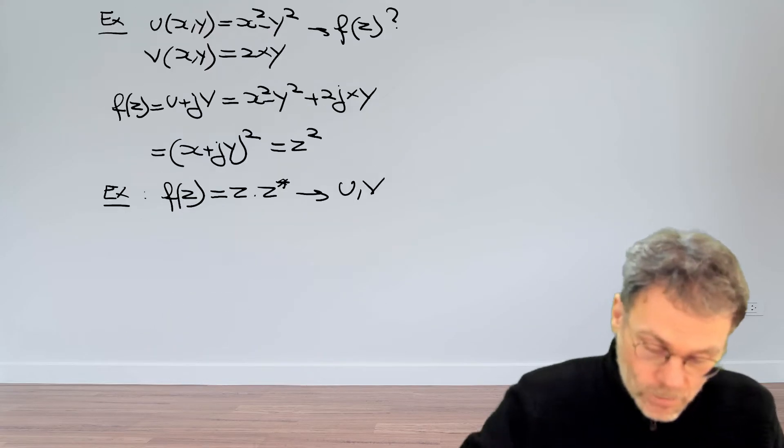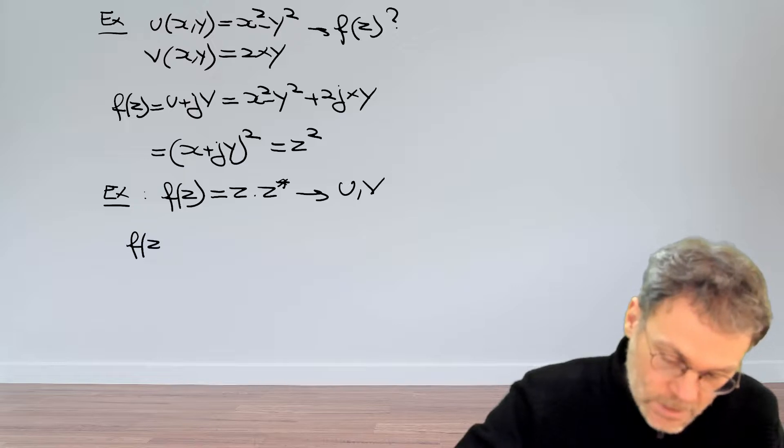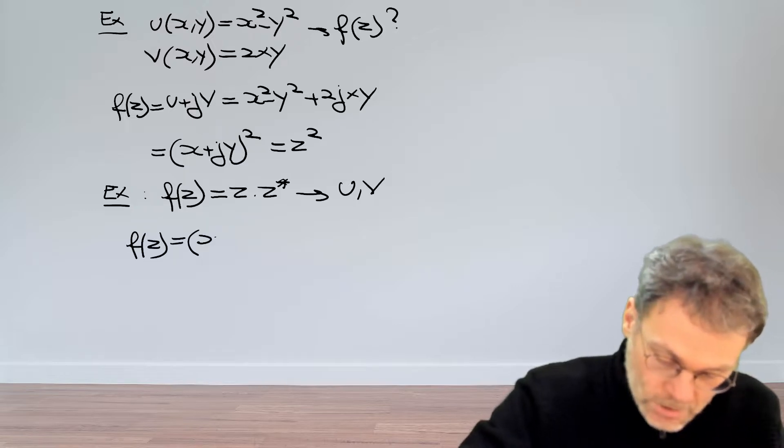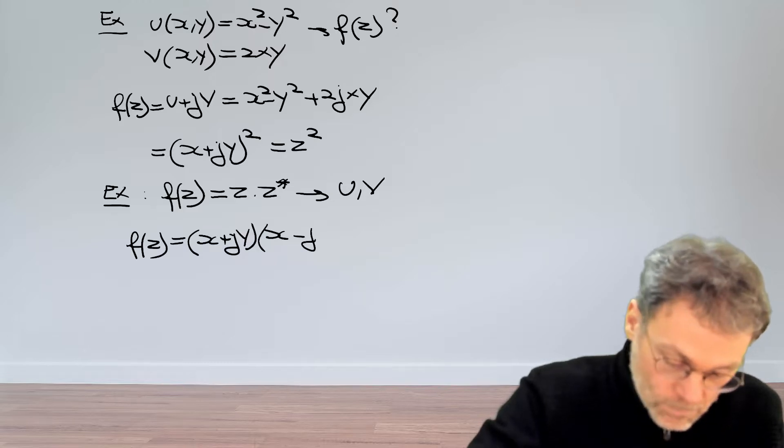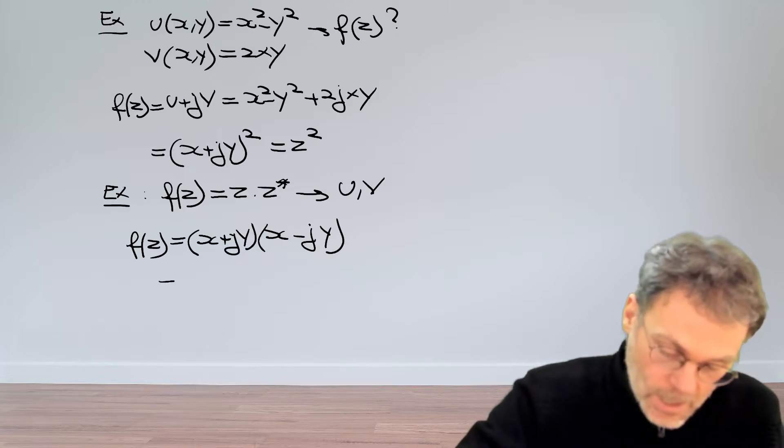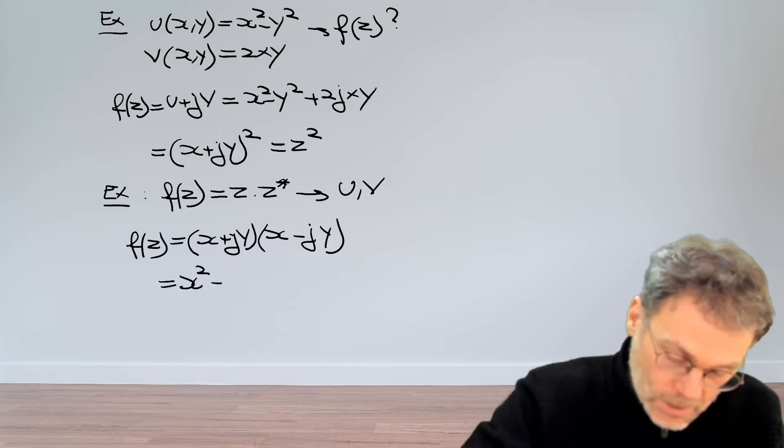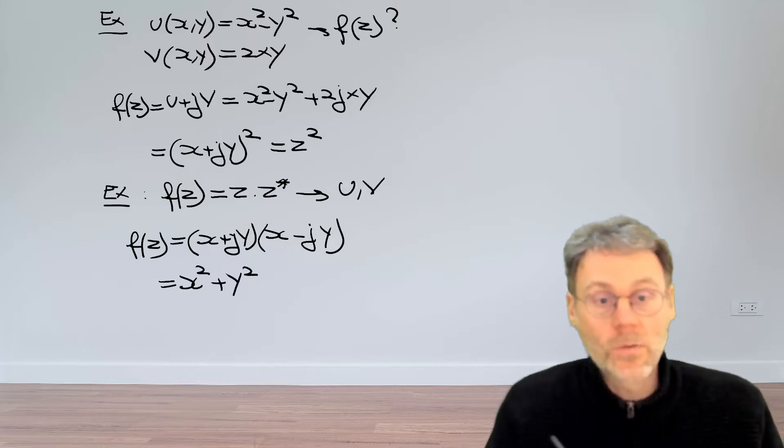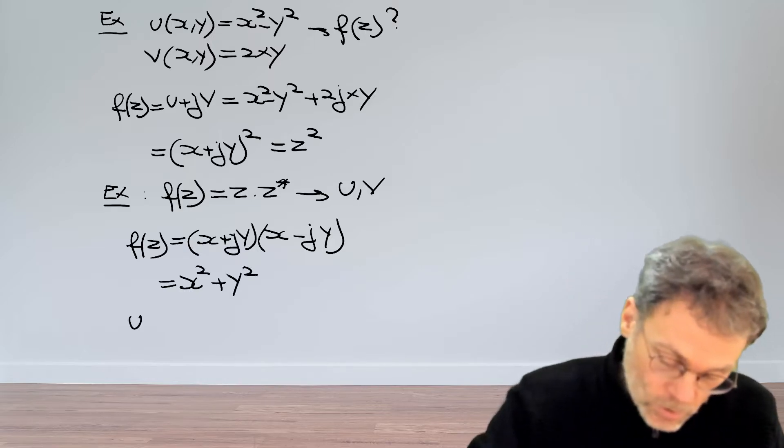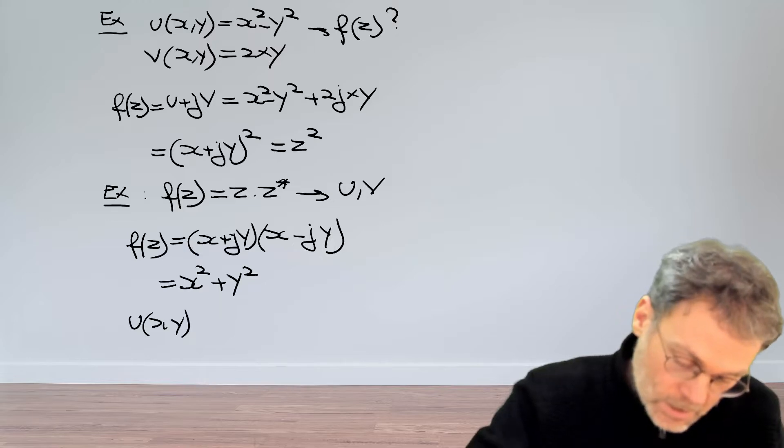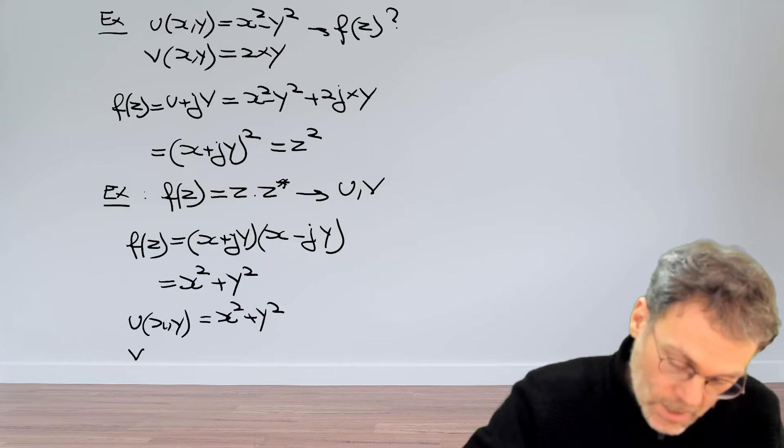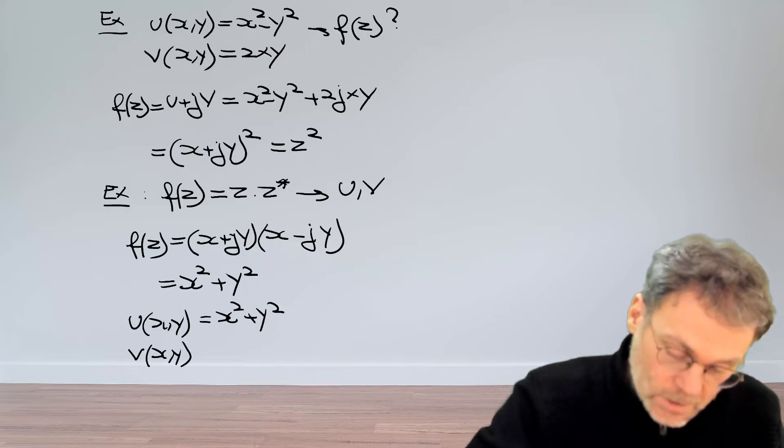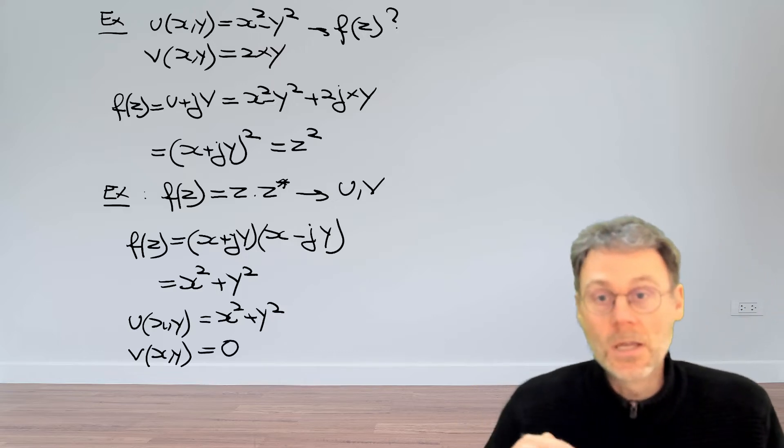Again pretty trivial, so f of z is z which is x plus jy, complex conjugate is x minus jy, and that turns out to be equal to x squared plus y squared. So u of xy is therefore just x squared plus y squared and there's no imaginary part which means that v is just equal to zero.